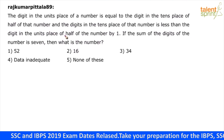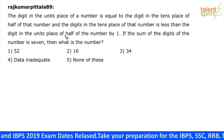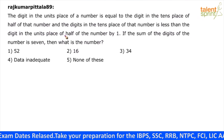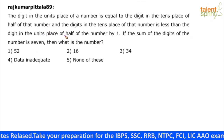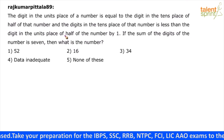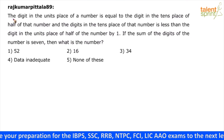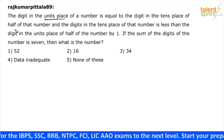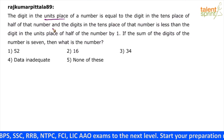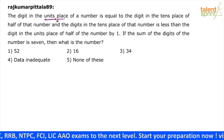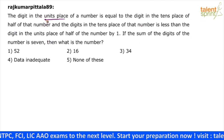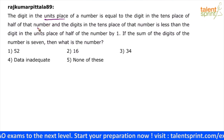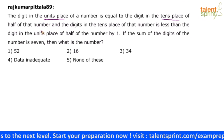Basically, the question is based on a two-digit number. The best way to answer such questions is to go by the options — any option which satisfies all the conditions will be the correct answer. The first condition says the digit in the units place of a number is equal to the digit in the tens place of half of that number. So you have to take the number and half of the number: units place in the number equals tens place in half of that number.